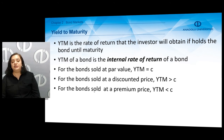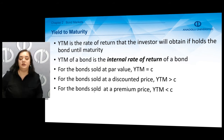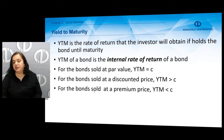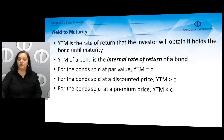On the contrary, for bonds sold at a premium price — meaning if the price of the bond is above the par value — the yield to maturity is smaller than the coupon rate, because the price is greater than the nominal value, so the expected return is something smaller than the coupon rate.